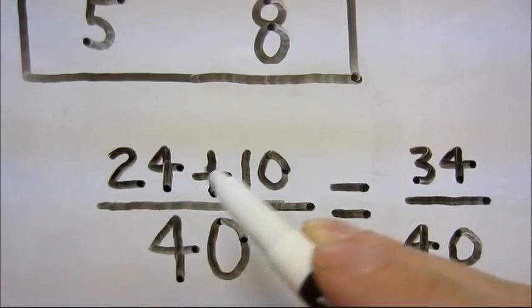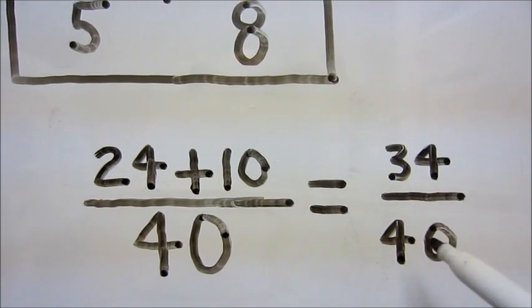Next we add 24 and 10 to get 34. Now we have 34 fortieths.